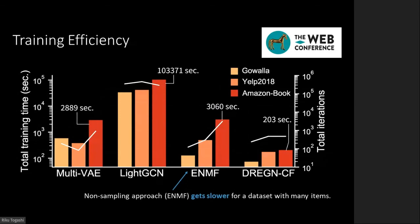We also examine the training efficiency of our proposed approach. LIGHT-GCN with a pairwise approach is extremely inefficient in terms of total training time and total iterations to converge. By contrast, ENMF, which is based on a non-sampling approach, can achieve excellent convergence on the Gowalla and Yelp 2018 datasets. However, it slows down on the Amazon Book dataset. This is because the non-sampling approach requires the use of all items in a dataset for each training step, and therefore takes much longer to update model parameters. Moreover, due to GPU memory limitations, ENMF cannot use a large number of users in a mini-batch, and thus requires more training iterations to converge. Our proposed DRE-based method consistently achieves fast convergence for all datasets. Because we designed our approach based on the expected loss—the risk—we can use arbitrary sub-sampling methods for both users and items.